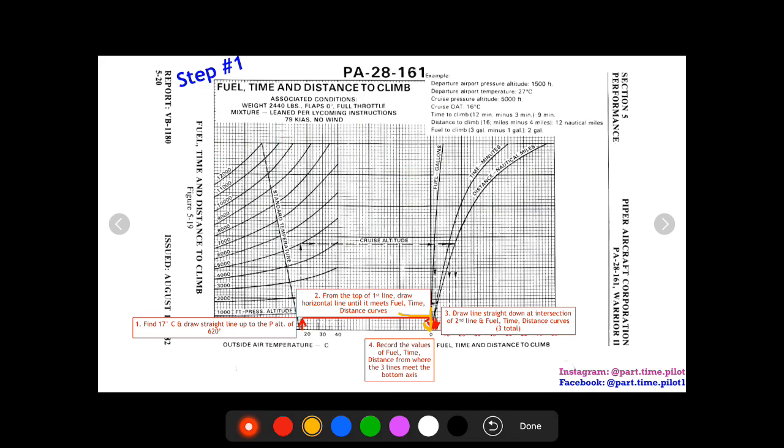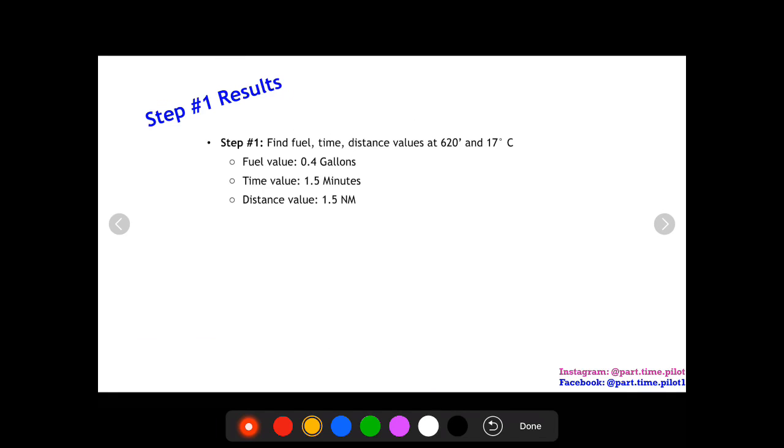But anyways, draw a line down at each point where this horizontal line intersects these curves. So draw a line down from where it intersects the fuel line, draw a line down from where it intersects the distance, and then read off the values on this x-axis. Each block is two, a value of two, and then you'll have your values for fuel, time, and distance to climb.